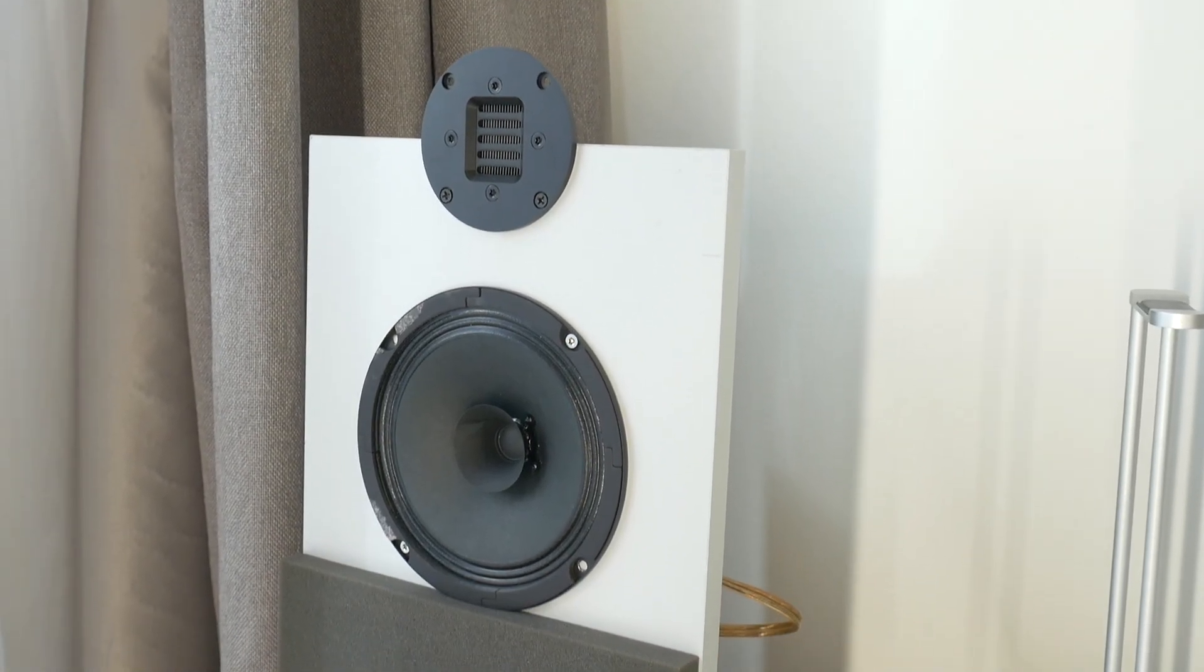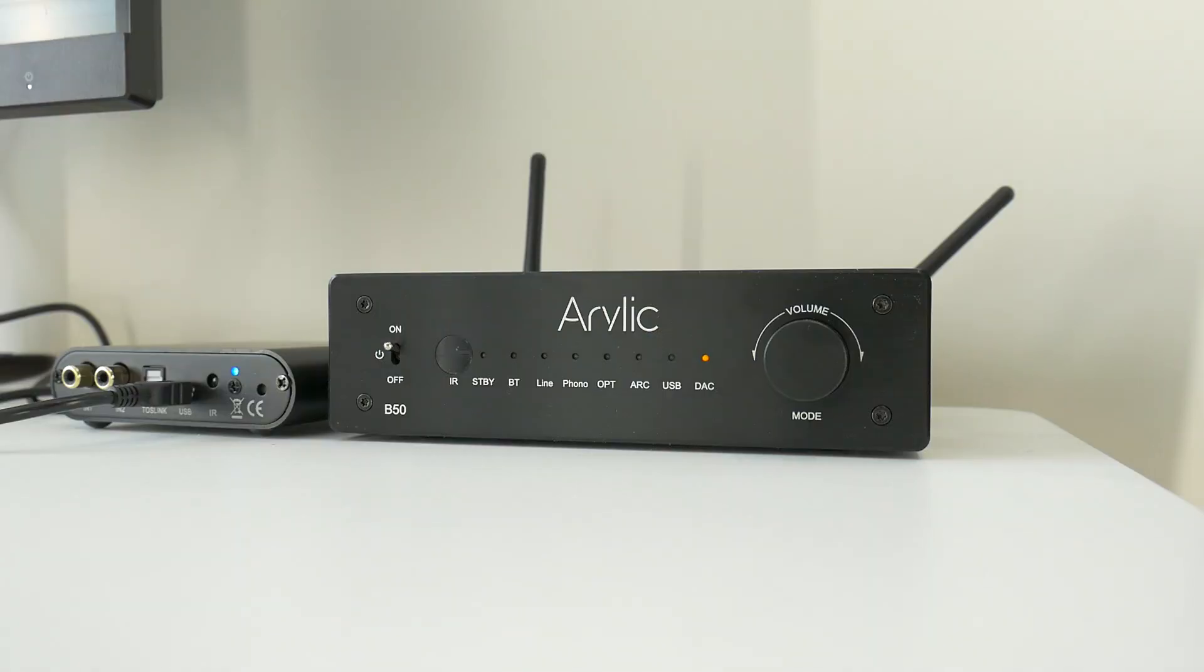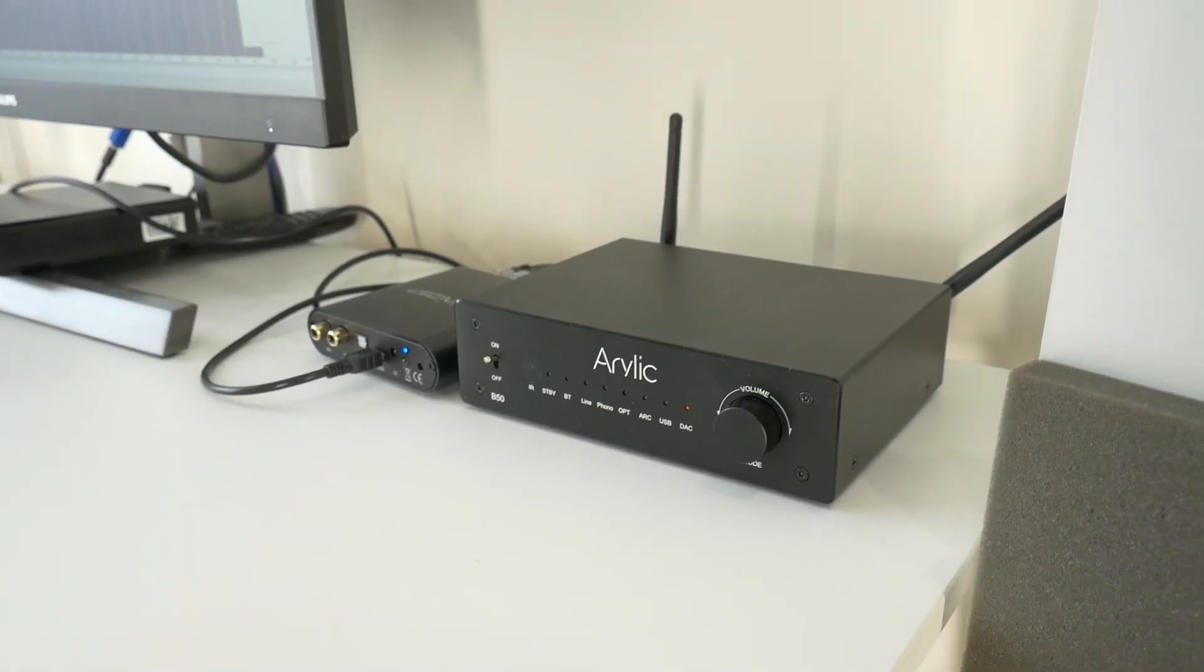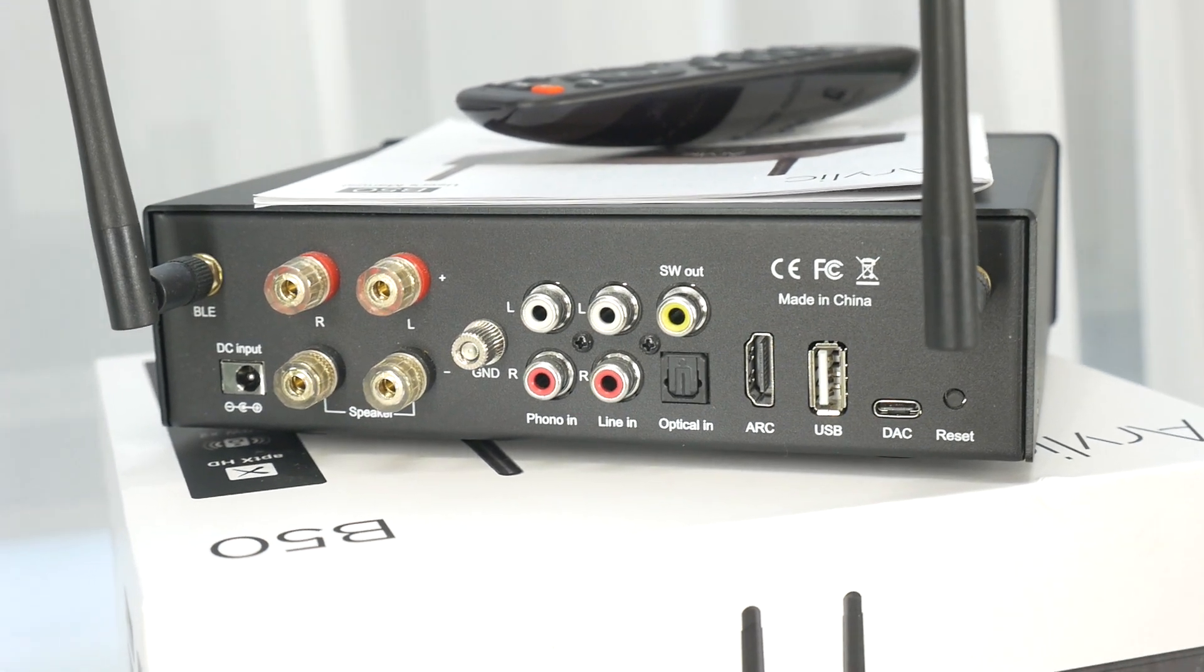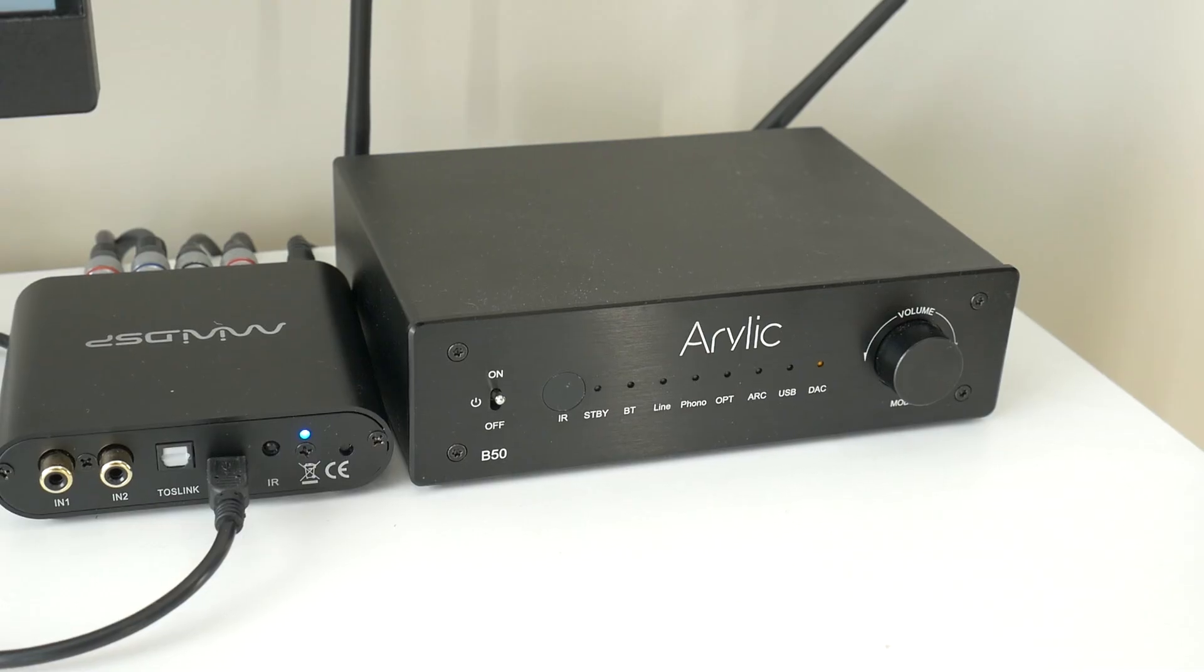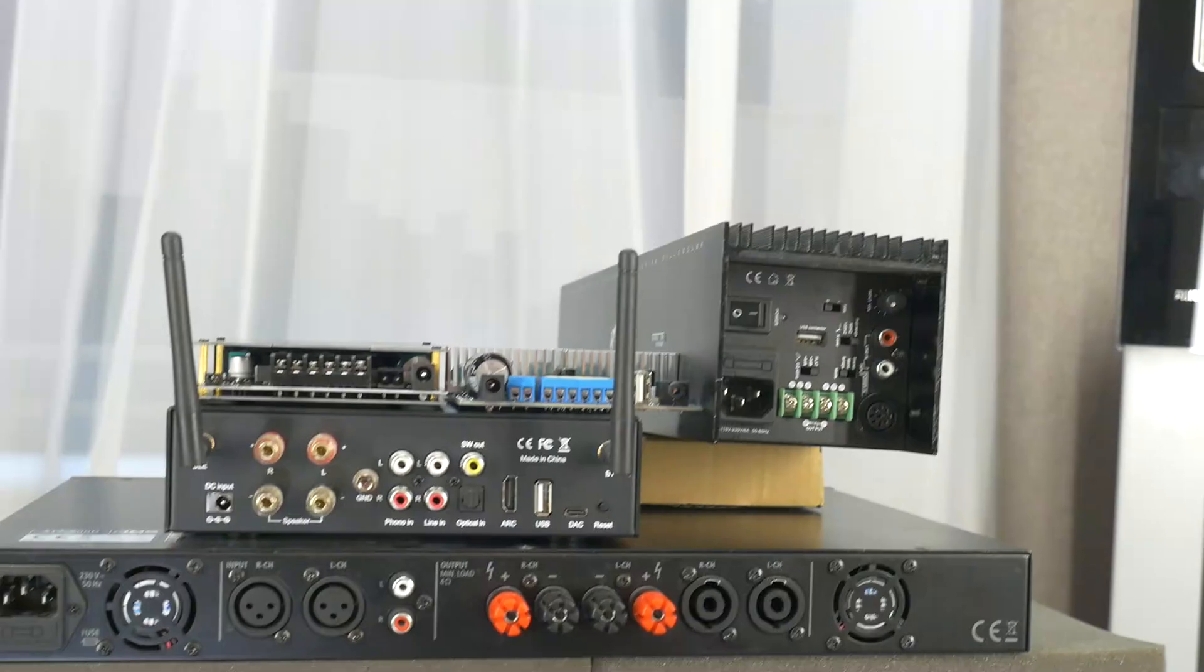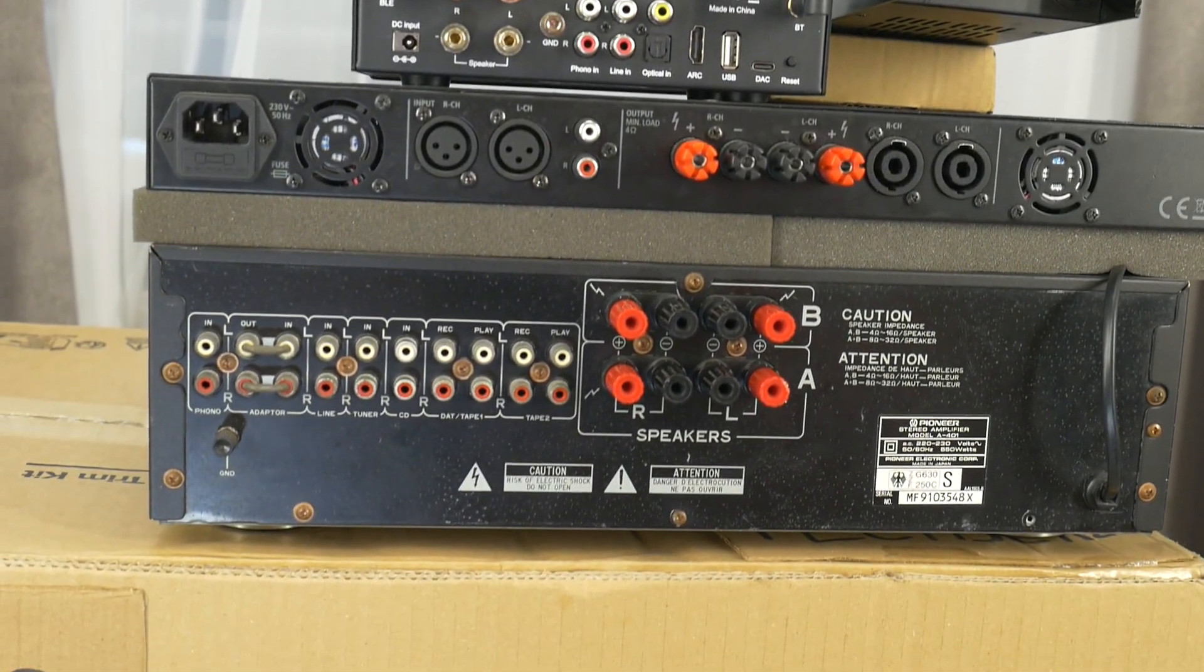Installing a tweeter in a full range open baffle system. As a power amp, I use Aurelic B50 D-class with a lot of features, also sub out. What do you think? Does it make sense for me to try this open baffle with some hi-fi AB-class amp?